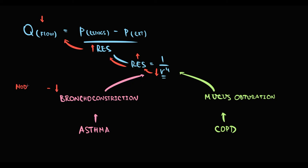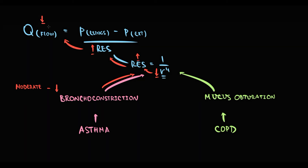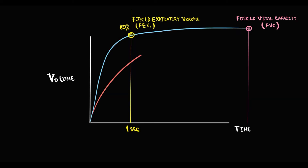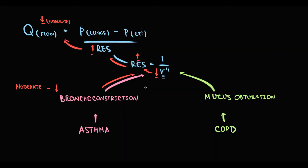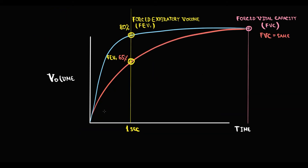In moderate asthma, bronchoconstriction is moderate, causing a moderate decrease in airway radius and a moderate increase in resistance, so airflow is moderately decreased. As a result, forced expiratory volume in one second will be lower than normal — 65%, for example. After some period of time, the patient will breathe out the same total amount of air as in the normal state. In severe asthma, bronchoconstriction is severe, causing a severe decrease in airway radius and a severe increase in resistance, so airflow will be severely decreased. As a result, forced expiratory volume in one second will be very low — 40%, for example.